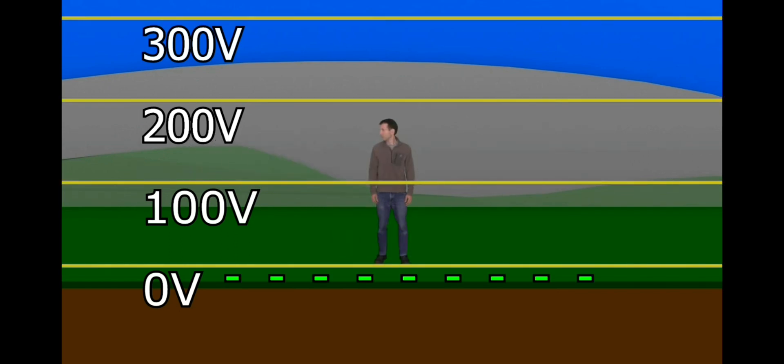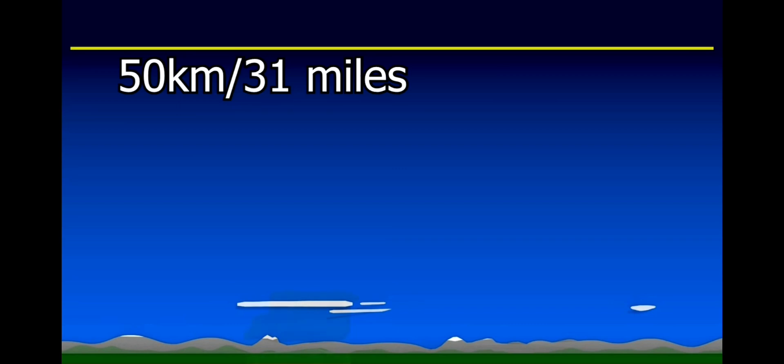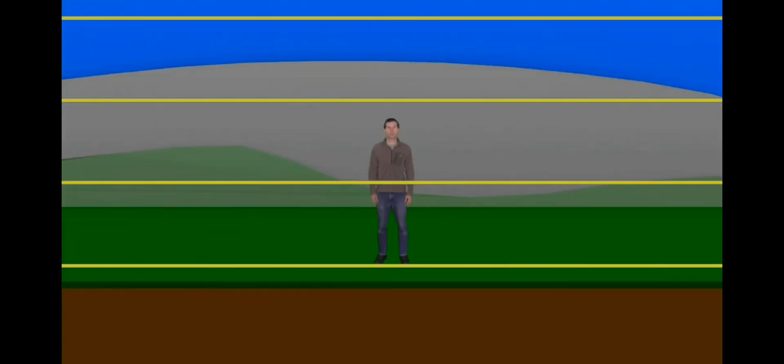Notice that the ground is negative and the sky is positive with respect to each other. According to Feynman, this extends upward to 50 kilometers or 31 miles where the air is very conductive. This is the case in fair weather. In stormy weather like a thunderstorm, things are quite different.